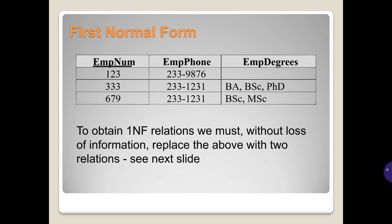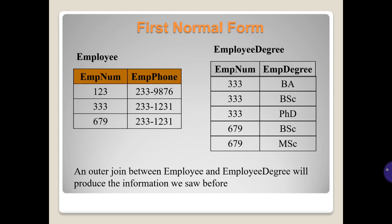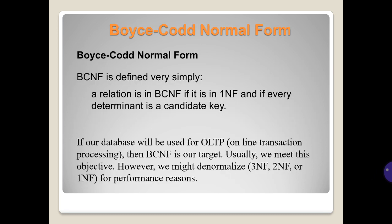To obtain 1NF relations we must, without loss of information, replace the above with two relations. These are Employee and EmployeeDegree. A natural join between Employee and EmployeeDegree will produce the information we had before.